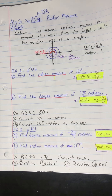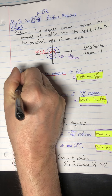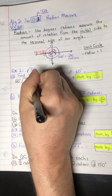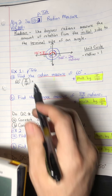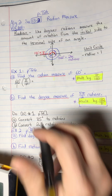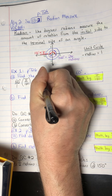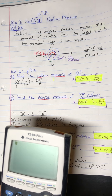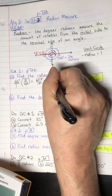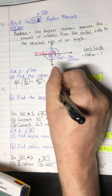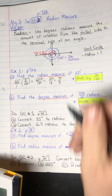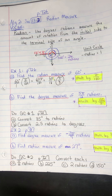So 60 degrees — I'm going to multiply that by pi over 180. You're multiplying a whole number by a fraction, so it's going to be 60 pi over 180. We don't want decimal answers; we want to keep them as fractions in reduced form. If I divide both by 10, I get 6 pi over 18. Divide again by 6, I get pi over 3. The answer is pi over 3. So 60 degrees is pi over 3 radians.